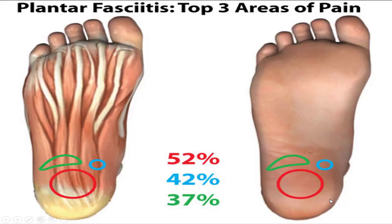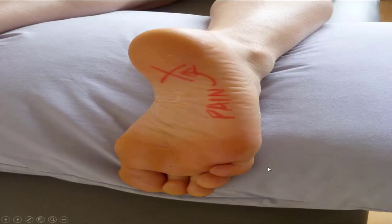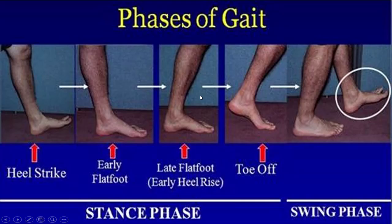Number two, the plantar fascia will most likely hurt in these areas right here and travel along these thick bands, especially if you pull your big toe up. This is what it should look like when you pull your toe up — it should be tight through there, right around here.